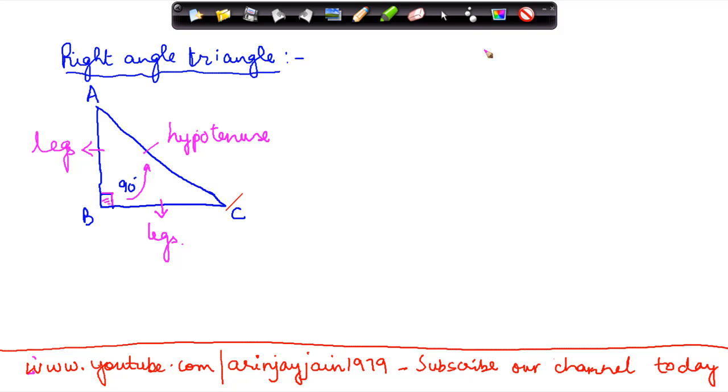Now what is so special about this hypotenuse and the legs of the triangle? What is special here is that in case of a right angle triangle, let's say suppose this hypotenuse, the length of hypotenuse is a, the length of this leg is b, the length of this leg is c.